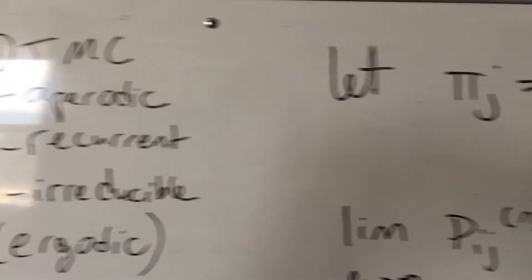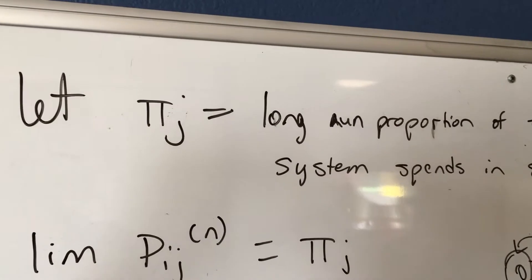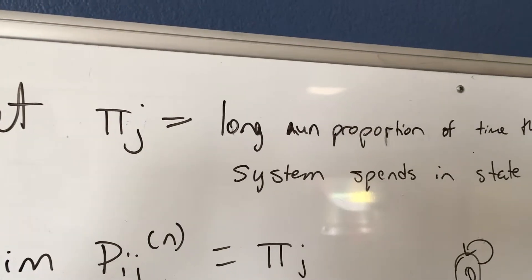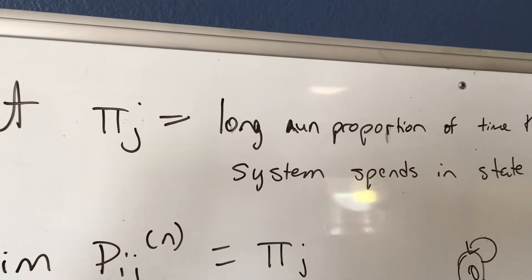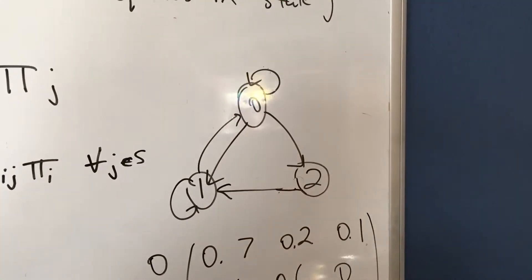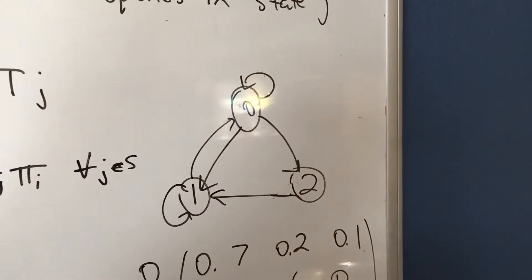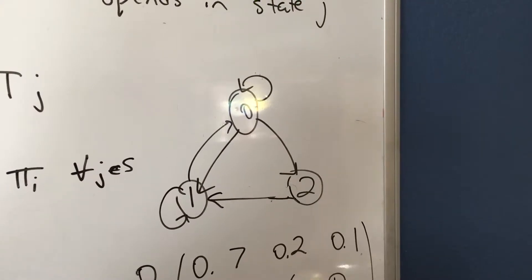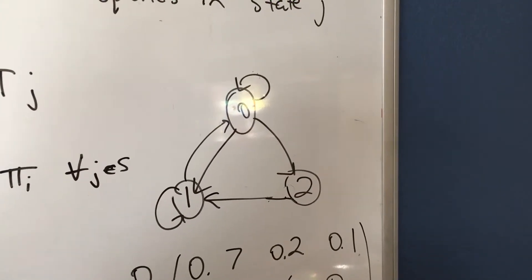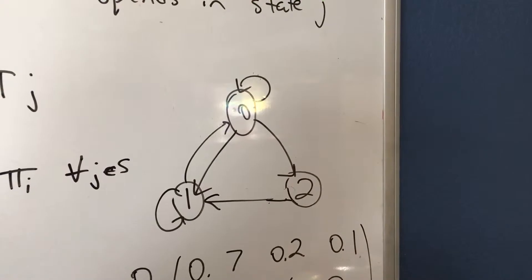In this system, we're going to find pi of j as being the long-run proportion of time that the system spends in state j. So, let's take this system right here — three states. We want to know the probability that over the long run the system is in state 0, state 1, or state 2.